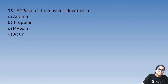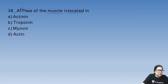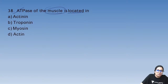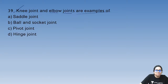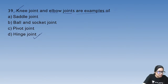Question 38: ATPase of the muscle is located in myosin. Question 39: knee joint and elbow joint are examples of hinge joints, which show movement in only one direction.